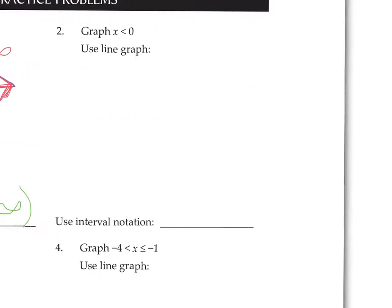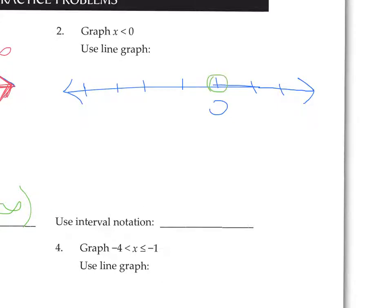The second question says graph x is less than 0. Making a number line, marking 0 and a few other numbers. The important number is 0. It's open this time, because there's no equal bar. x is less than 0, so we're going to shade less than 0. There's no right boundary, so these values go off into negative infinity.